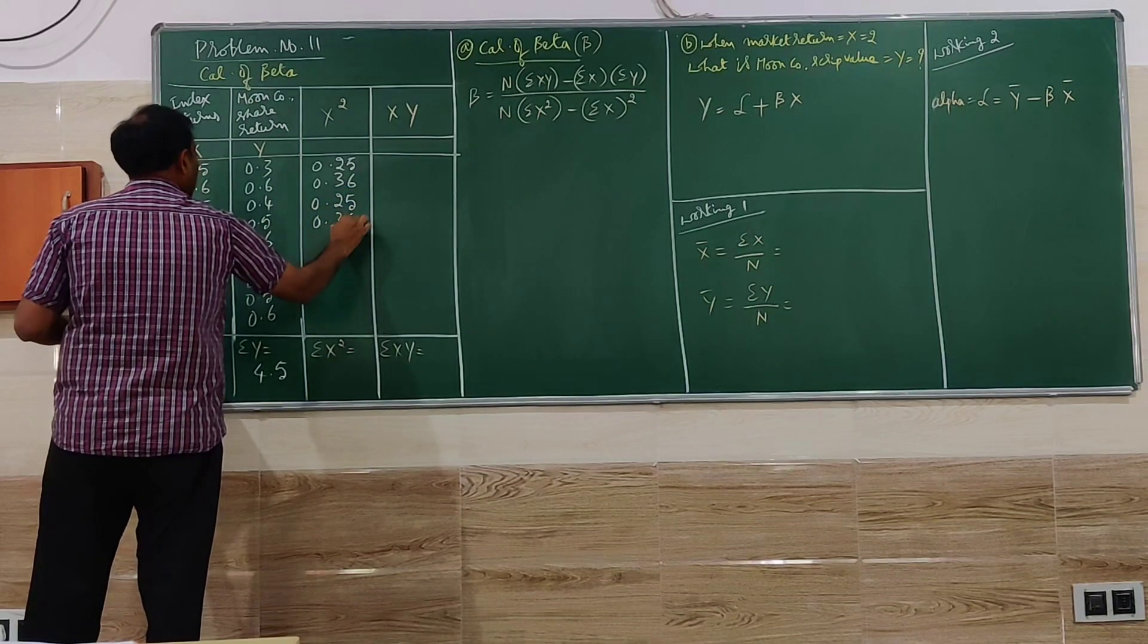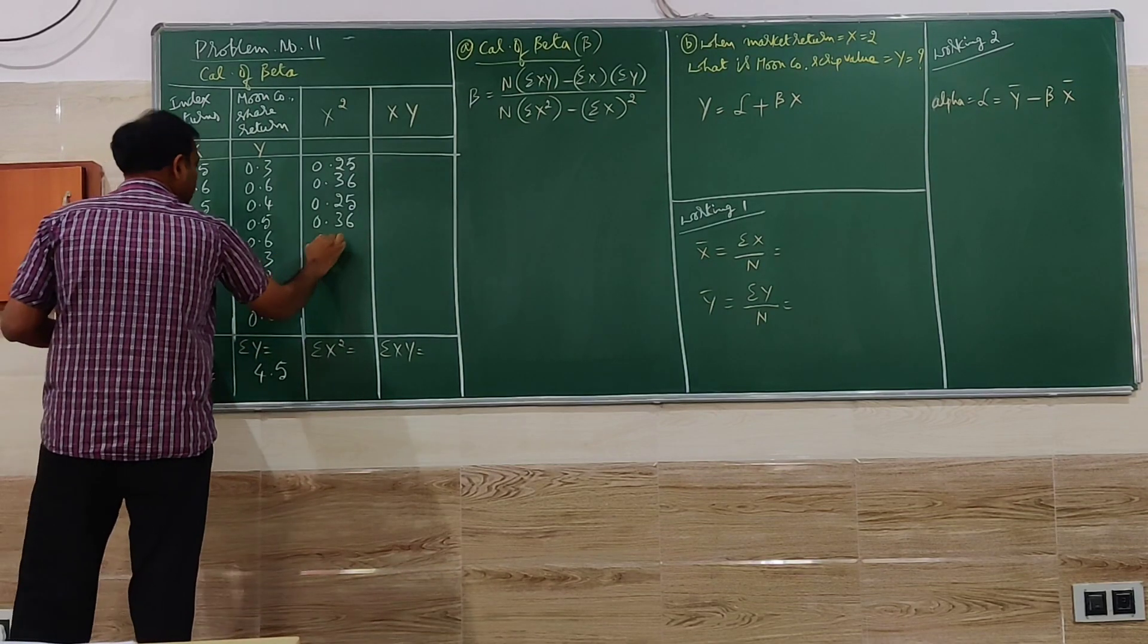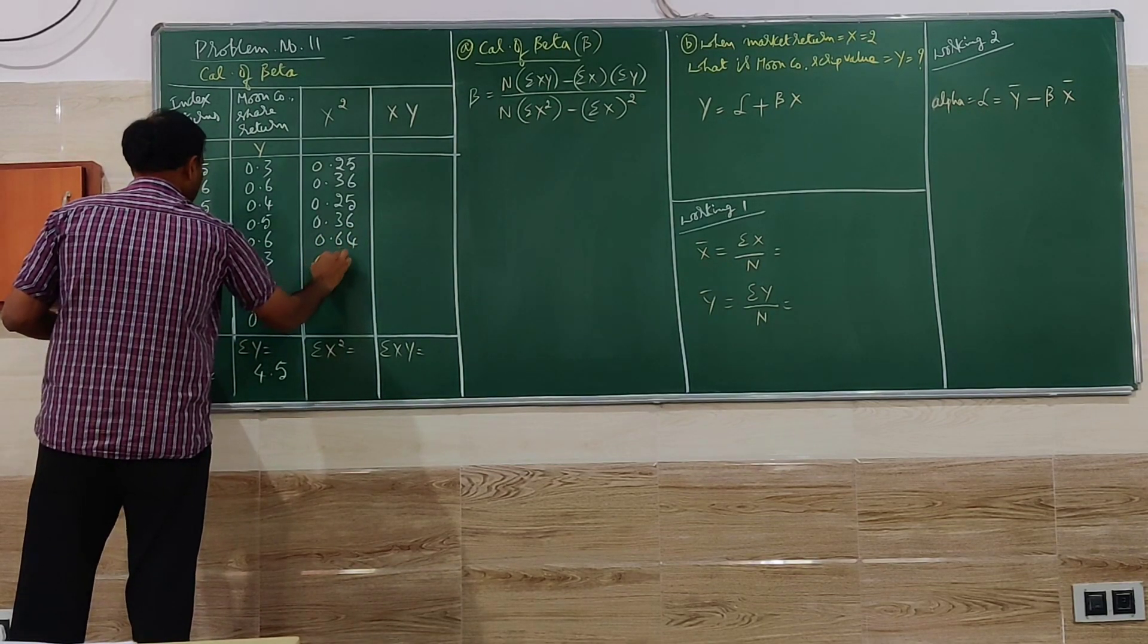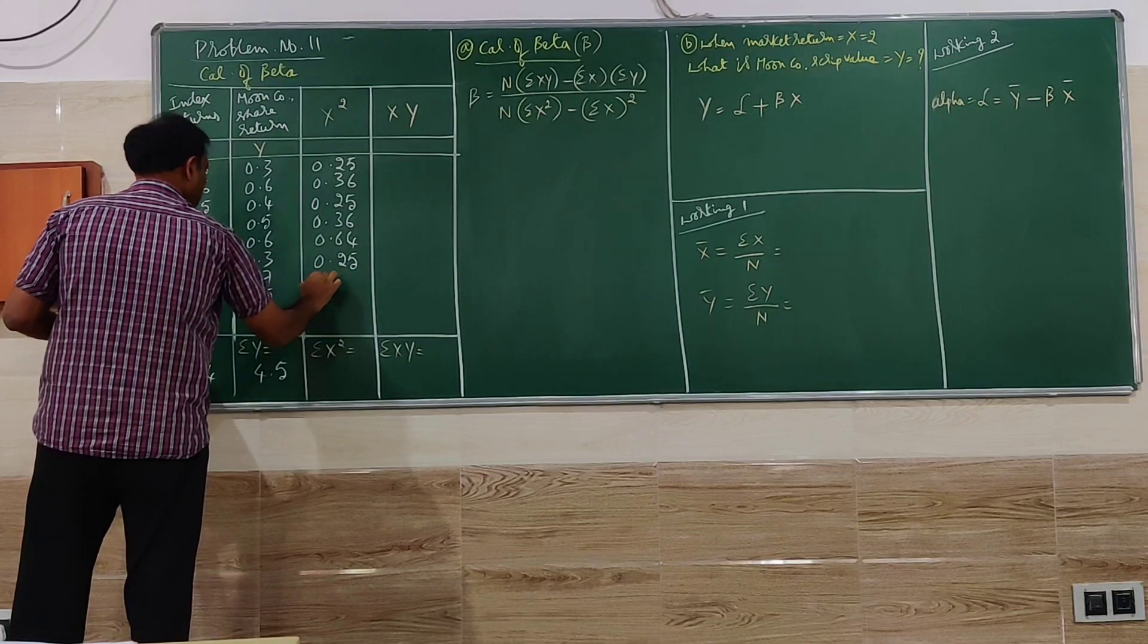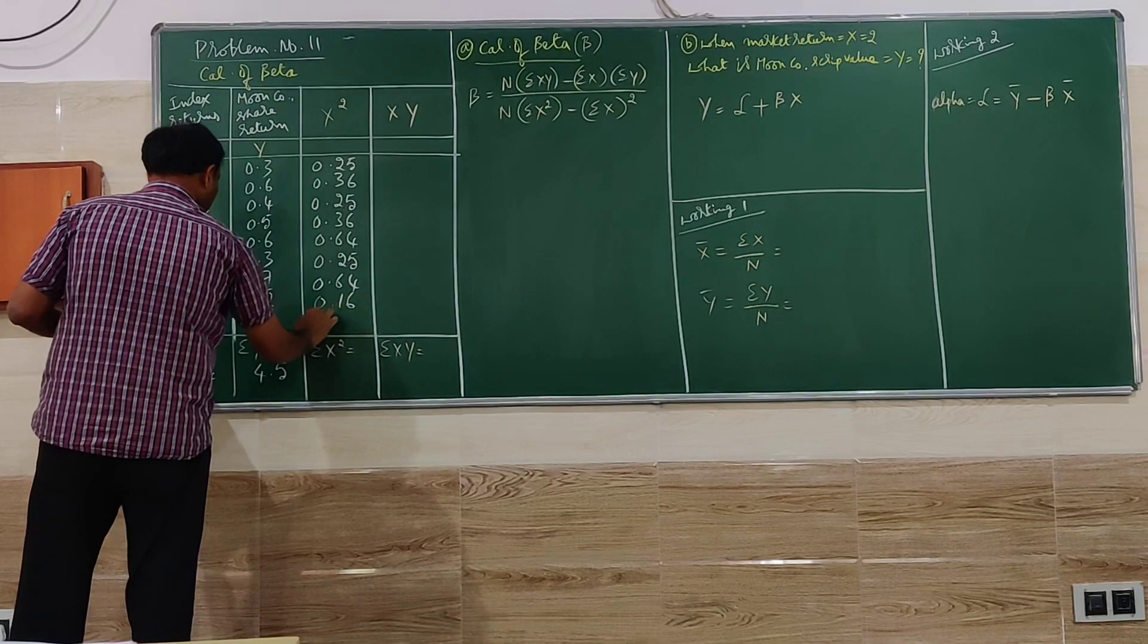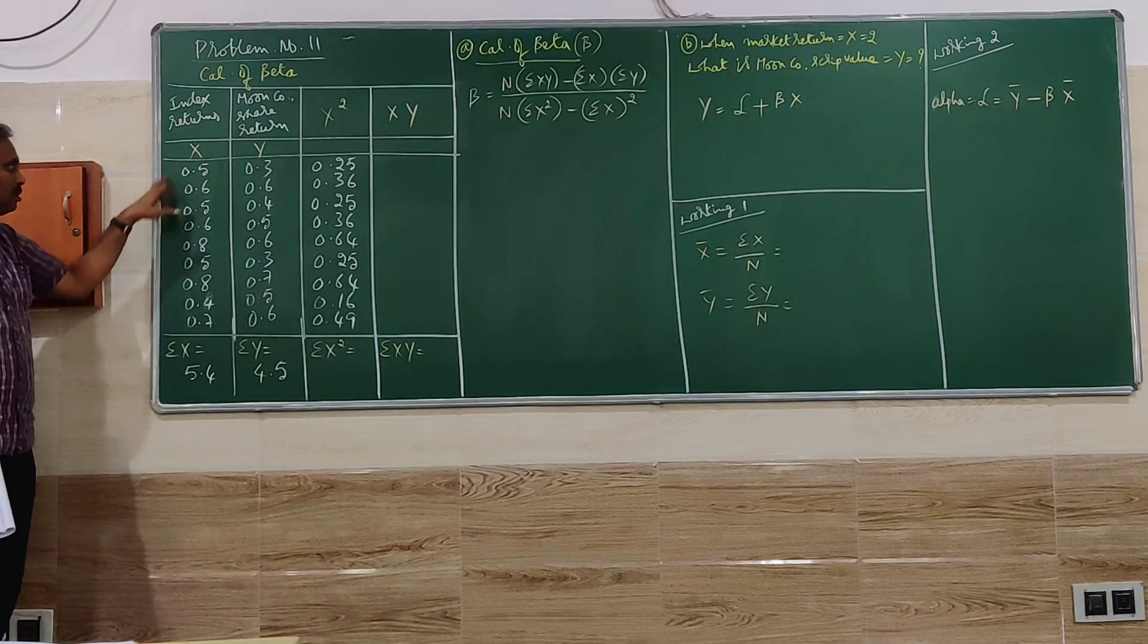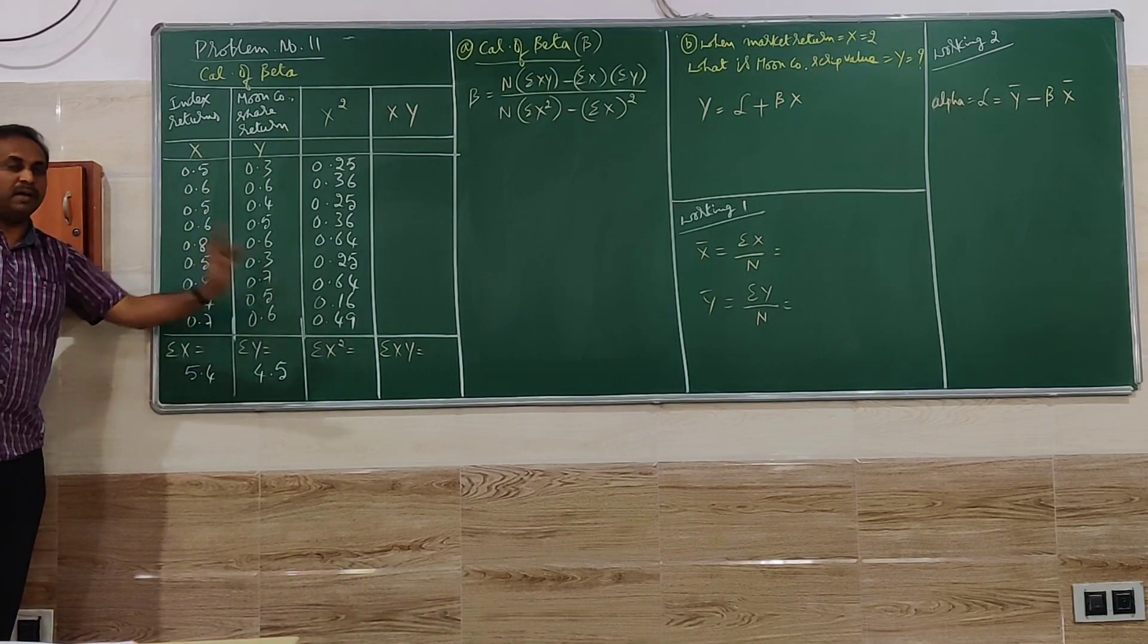0.6 square, next 0.6 square, next 0.8 square, again 0.5 square, 0.8 square, 0.4 square, 0.7 square. So these values have to be squared here.